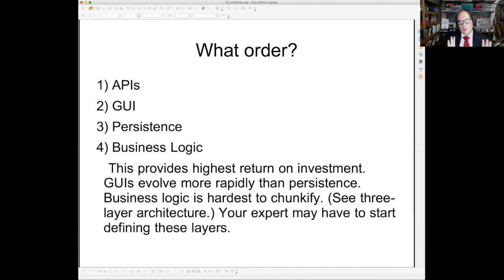And then I don't want to go through all the rest of this. I don't quite have time except to talk about the order in which you should rewrite things. APIs first, GUI next, persistence, and then finally business logic. Because that is a way to provide the biggest return on investment for the lowest risk as you rewrite things using the strangler pattern. Back over to you, Elizabeth.